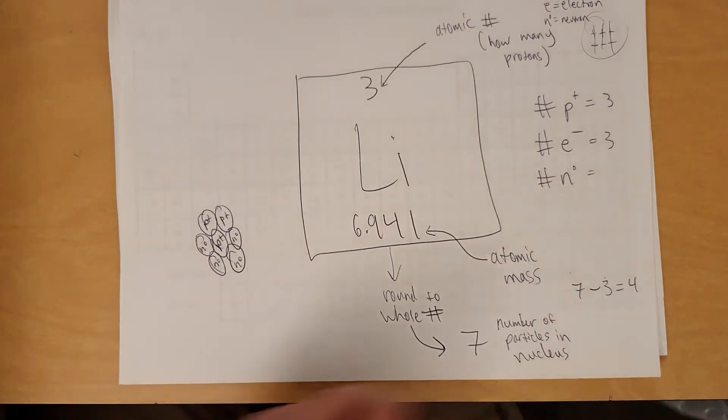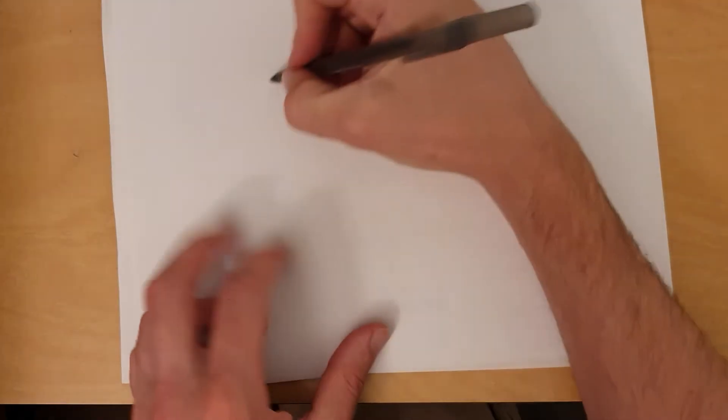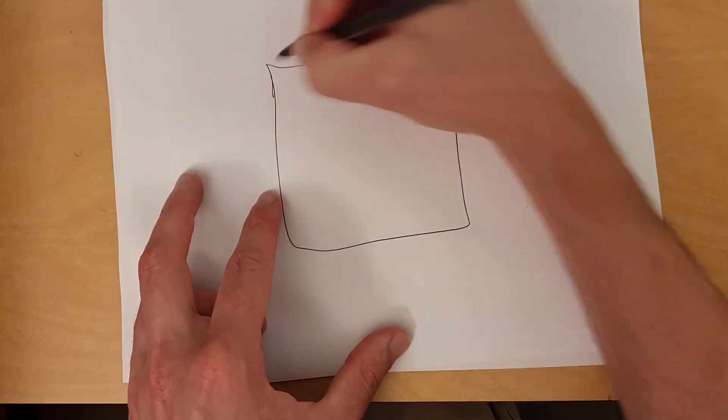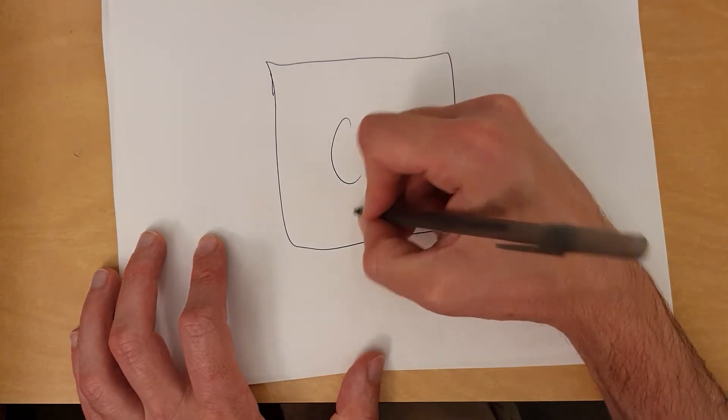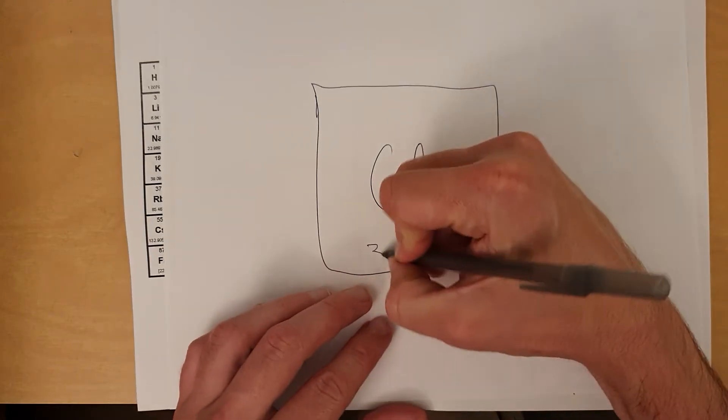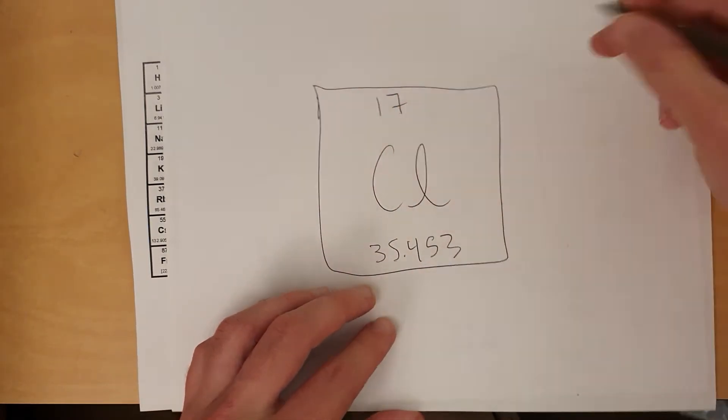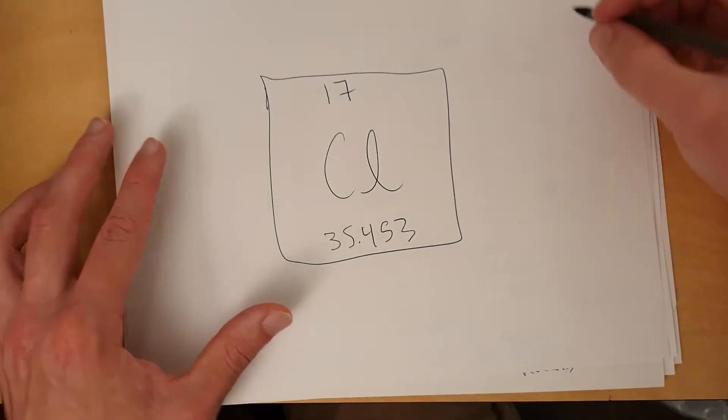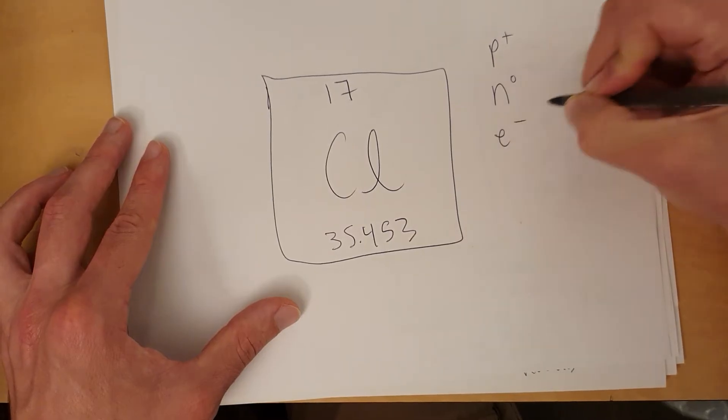Okay, another example. Let's do the example of chlorine. Let's see. The number would be, I'm going to remember exactly what the number was, 35.453, and it's got the number 17 on there somewhere. Protons, neutrons, electrons.